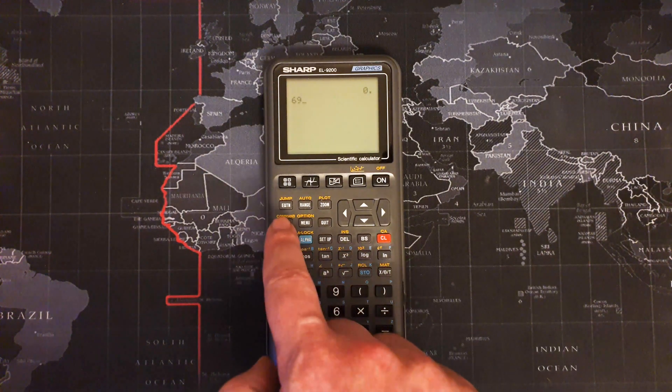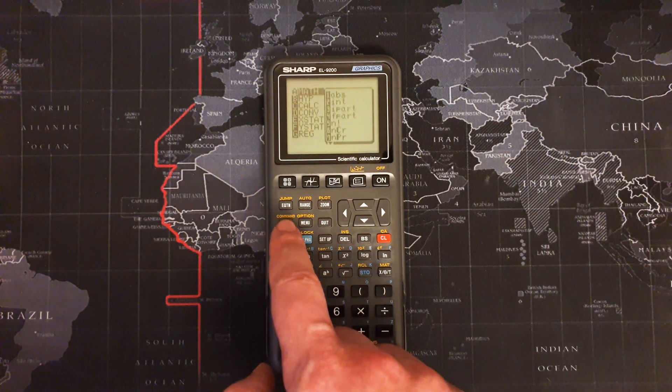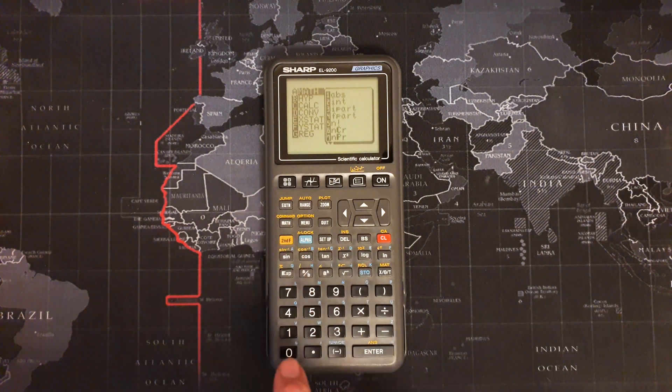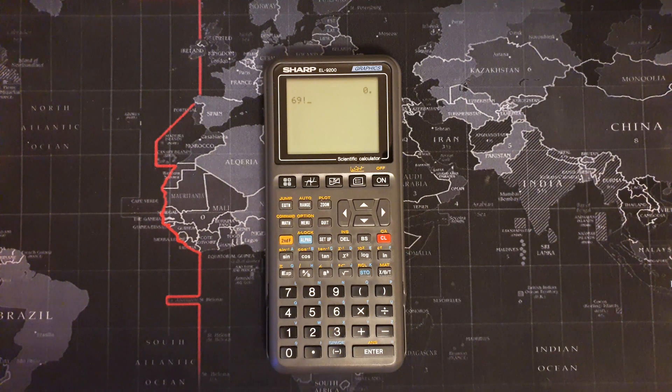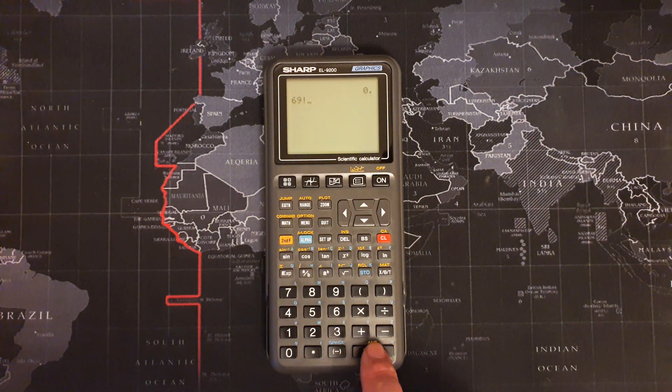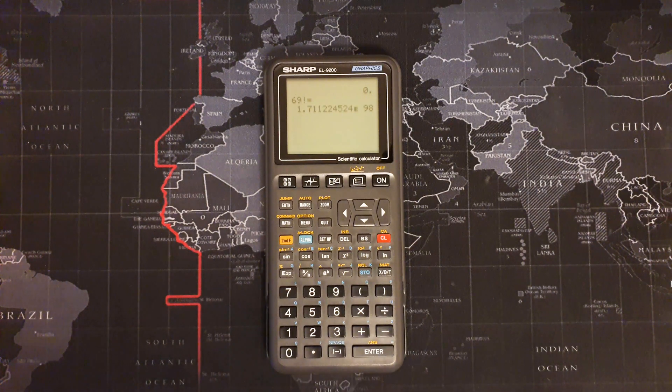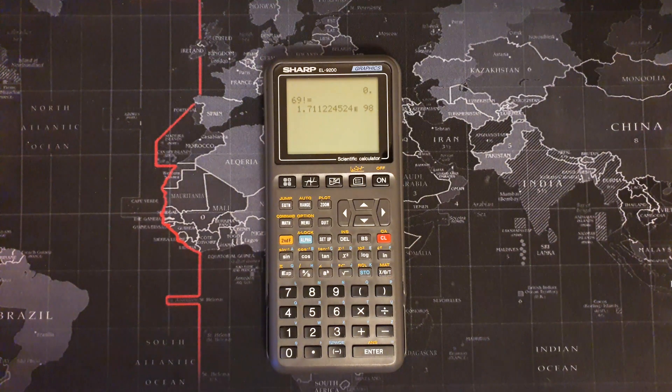Let's try something more complicated: 69 factorial. Notice how I have to select the option from a menu, not via the keypad. That seems slightly faster but it still wasn't instant.